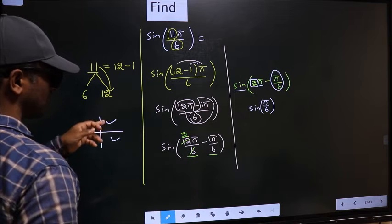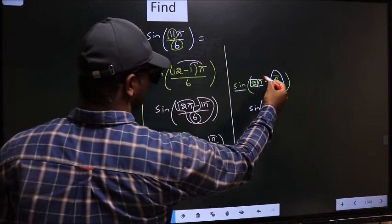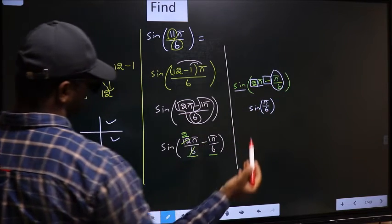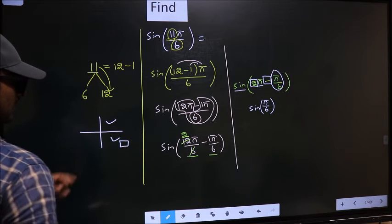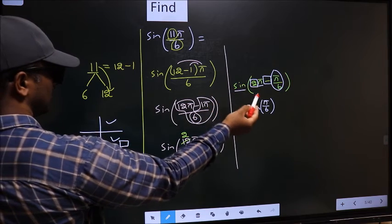So now to decide in which quadrant does it lie, we should look at this symbol. Here we have negative. That means the angle lies in the fourth quadrant. And in the fourth quadrant, sine is negative. So put negative.